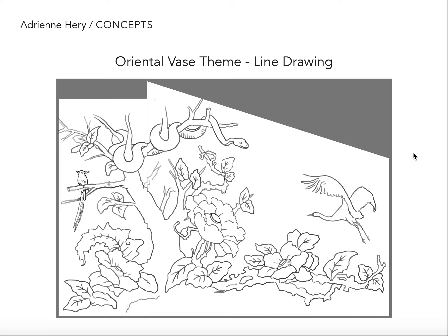This is my line drawing sketch idea for the placement of the tree with the flowers and the additional animals that we talked about. As you can see, I have the floral element from the vase and the leaves and things like that.